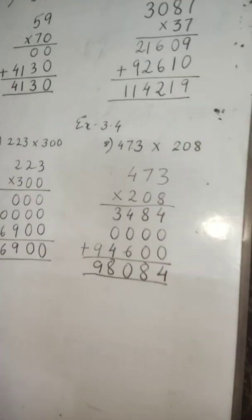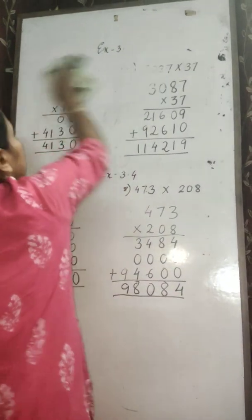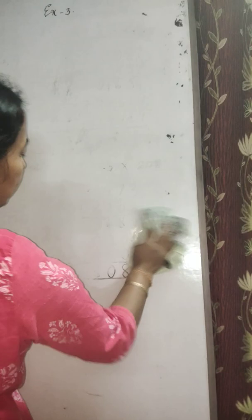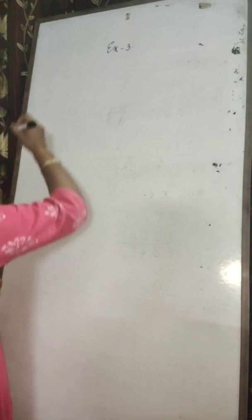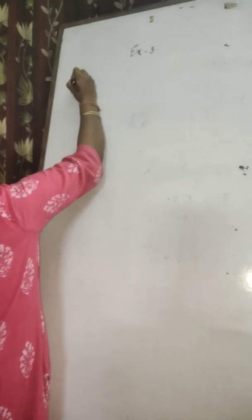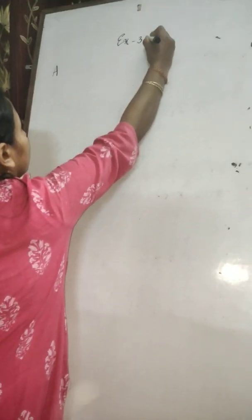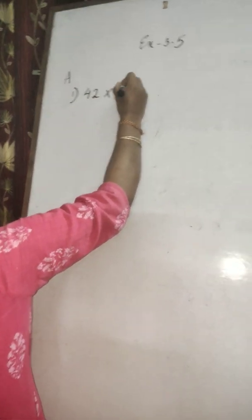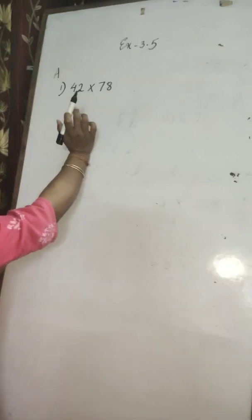Now we will go to the next exercise — exercise 3.5. In this exercise, we have to estimate the product by rounding off to the nearest 10. You have already learned how to round off a number. Here is given 42 into 78. First of all, you have to round off each factor to the nearest 10.